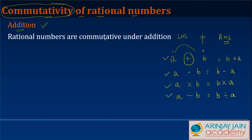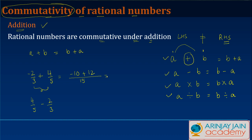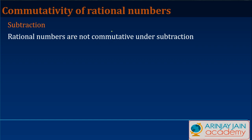Rational numbers are commutative under addition, which means a plus b equals b plus a. Let's take two rational numbers: minus two upon three plus four upon five. We get 15 as the LCM — five times minus two gives minus 10, plus 12, giving 2 upon 15. Reversing the order: 3 times 4 gives 12, minus 5 times 2 gives minus 10, again 2 by 15. The left hand side equals the right hand side, so rational numbers are commutative for addition.